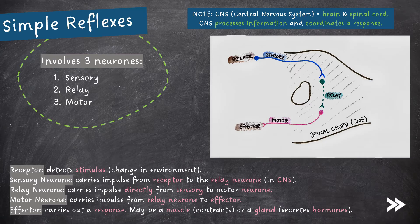And finally, the effector carries out a response. An effector may be a muscle, which contracts, or a gland, which secretes hormones.